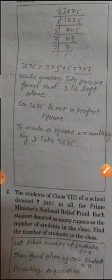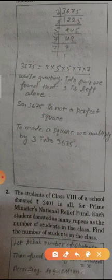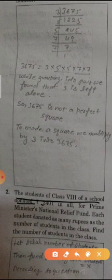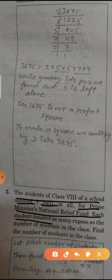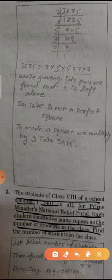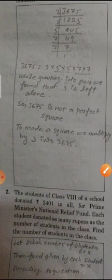Number 2. The students of class 8 of a school donate 2401 rupees for prime minister national relief fund. Each student donates as many rupees as the number of students in the class. Find the number of students in the class.